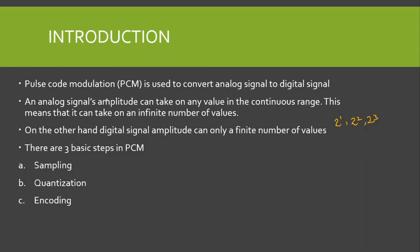Now to convert the analog signal to a digital signal — that is, in PCM — we have three basic steps: sampling, quantization, and encoding.